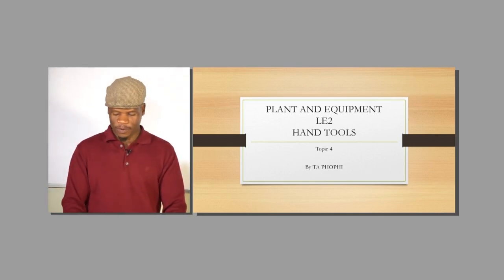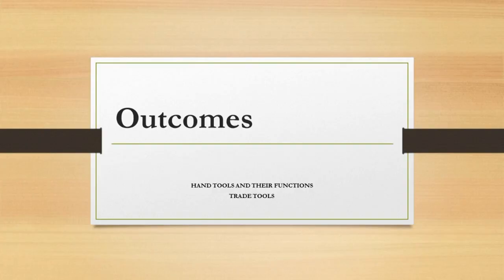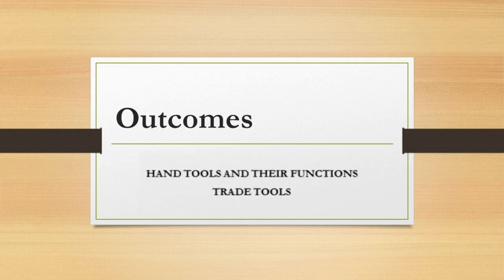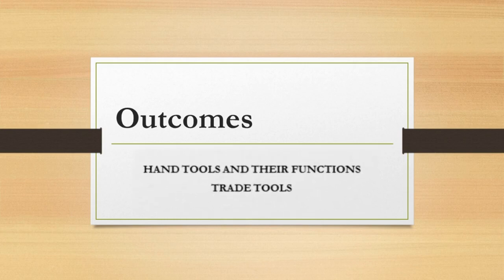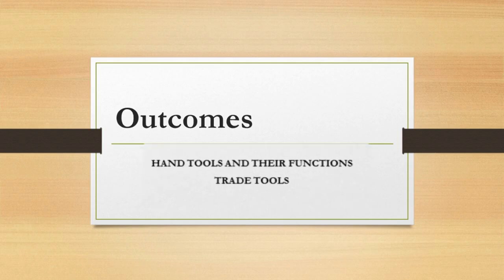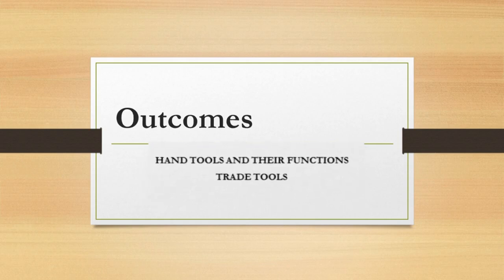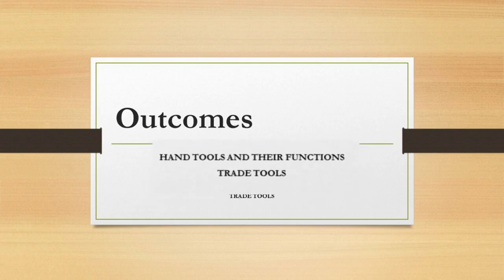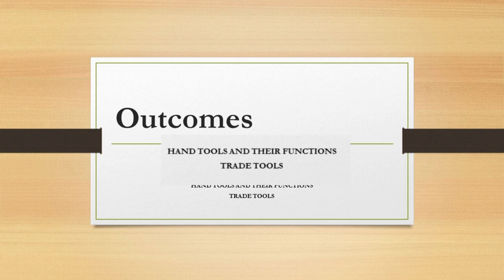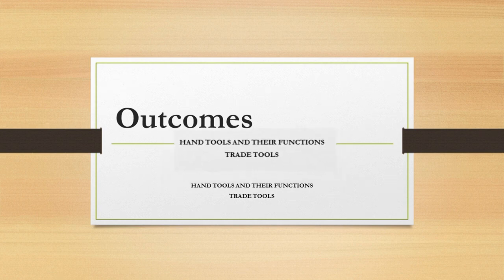The outcomes that we're going to cover — there are only two outcomes. You must be able to know how to use the hand tools, know their function, identify them, and lastly you must be able to cluster them according to the trade that they belong to.